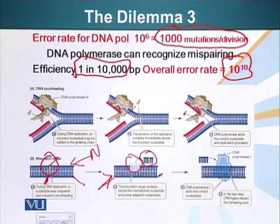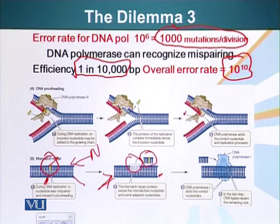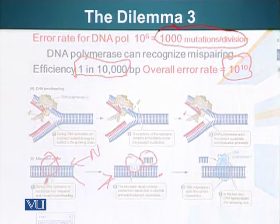This is the job of DNA polymerase 1 — the same DNA polymerase that also helped us remove Okazaki fragments. This system will remove the mismatch base pairs if they have been made after the DNA has been recently synthesized.